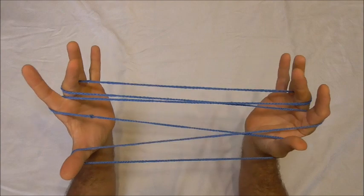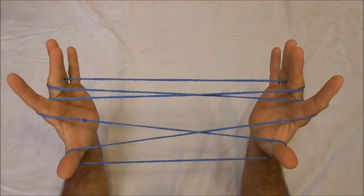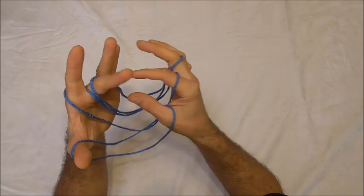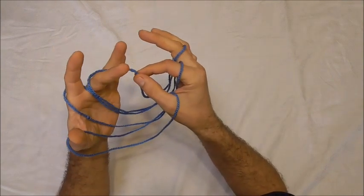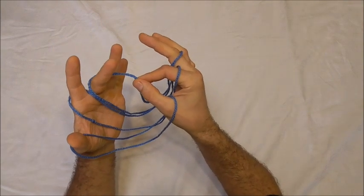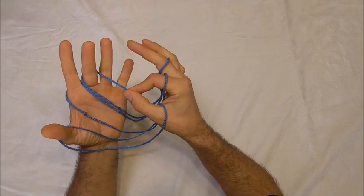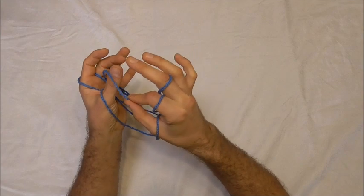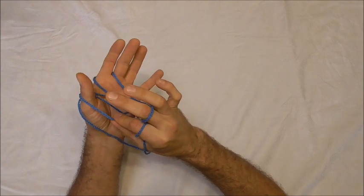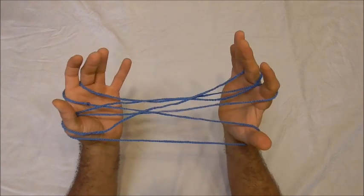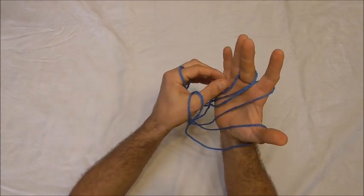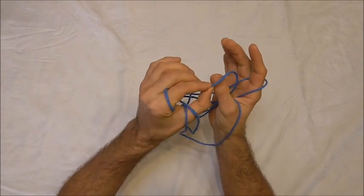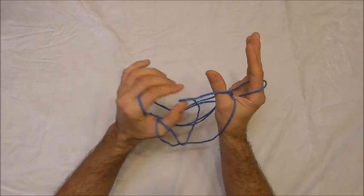Next I just want to transfer the middle finger loop onto the thumb but I want to do that by giving it a half twist so I'm going to take the far middle finger string and when I transfer it on that far string becomes the near thumb string so I get the far middle finger string and when I transfer it it becomes the near thumb string.